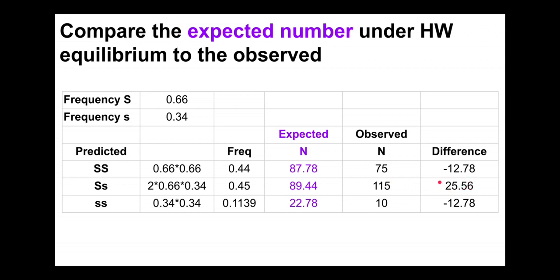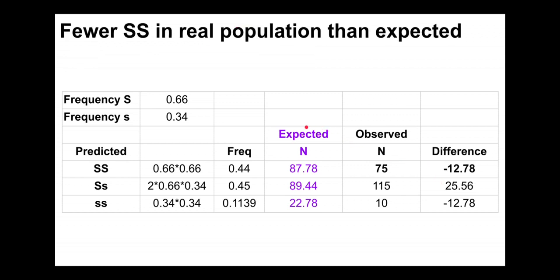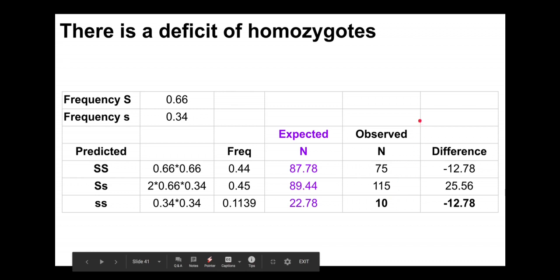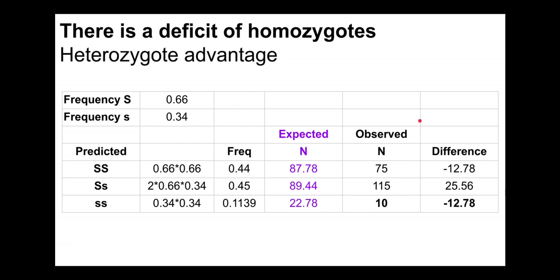There is a heterozygote excess. There are fewer big S big S and fewer little s little s in the real population than predicted, and more big S little s than predicted. There is a deficiency of homozygotes and an excess of heterozygotes. If the population were in Hardy-Weinberg equilibrium, the expected and observed numbers would be much closer to each other — so we are not in Hardy-Weinberg equilibrium.